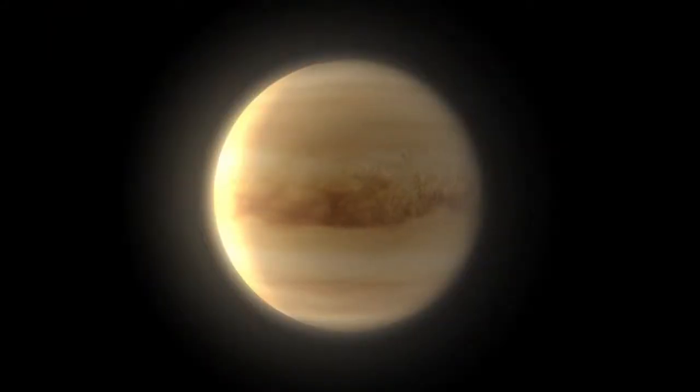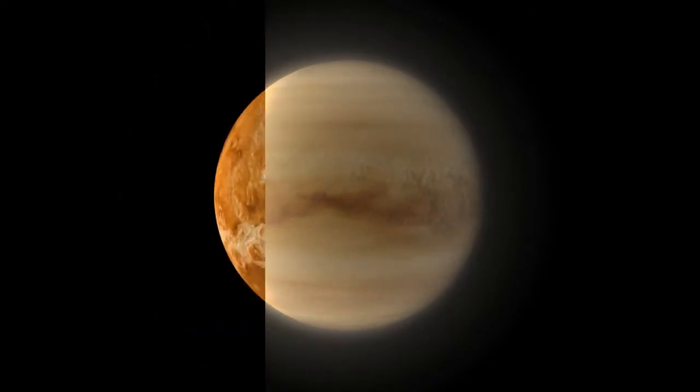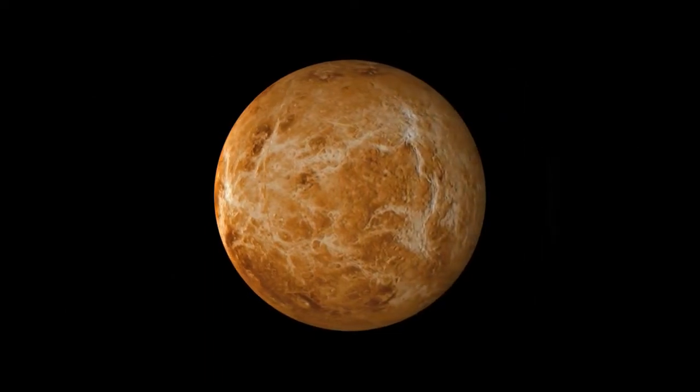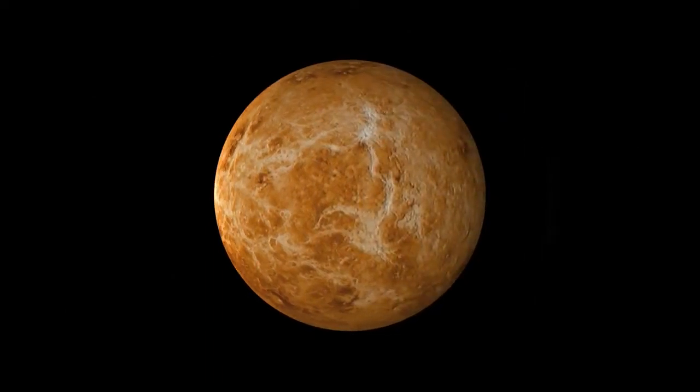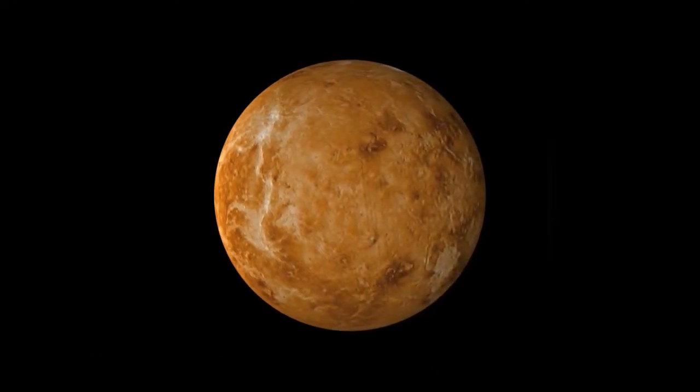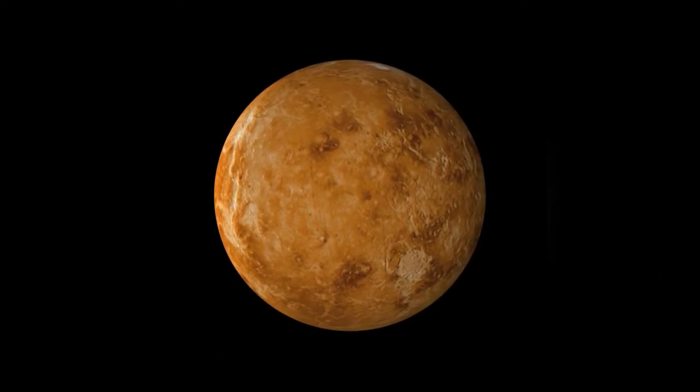The age of a planet's surface is generally determined by the number of craters present. In the case of Venus, only the largest rocks would be able to survive the journey through the thick atmosphere. Therefore, Venus has very few craters on its surface, and none that are older than about 500 million years.